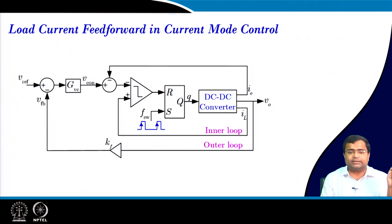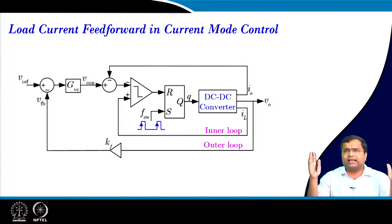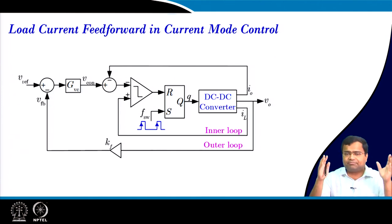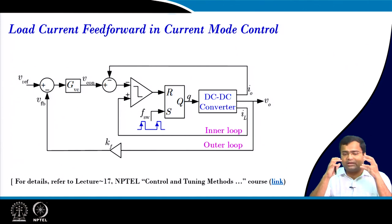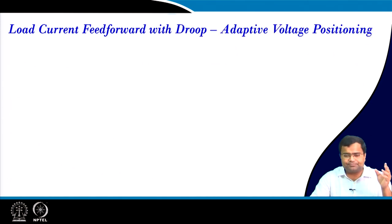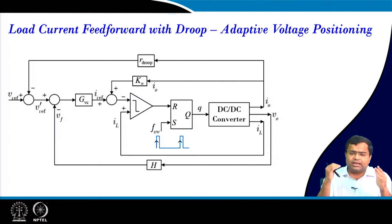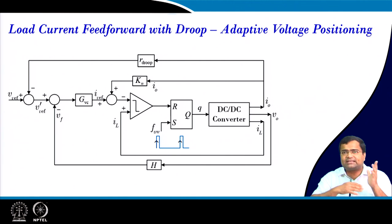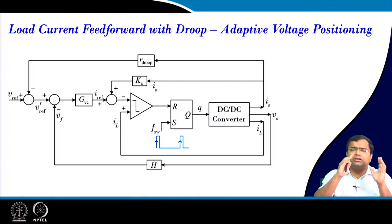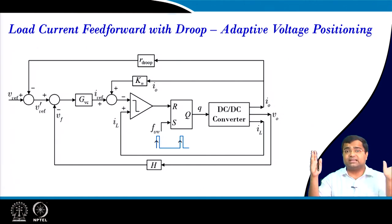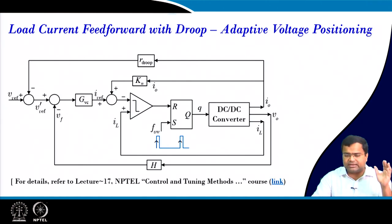We have also discussed load current feed forward in current mode control, which can make the output impedance behave like a resistive droop, enabling ultra-fast transient response. A suitable design can lead to time-optimal recovery. This is discussed in lecture number 17. Furthermore, incorporating droop along with load current feed forward allows you to achieve very fast transients and make the output impedance virtually look like a resistance — almost frequency-independent — so the converter responds to load transients very fast, almost instantaneously. This is also discussed in lecture number 17.